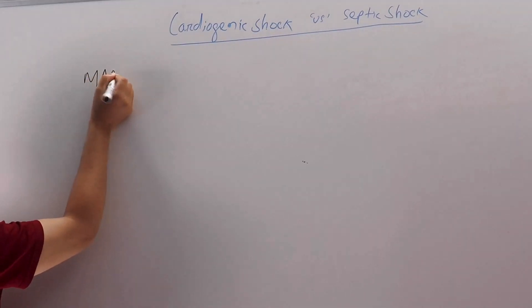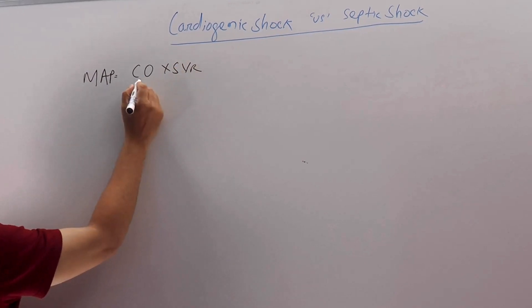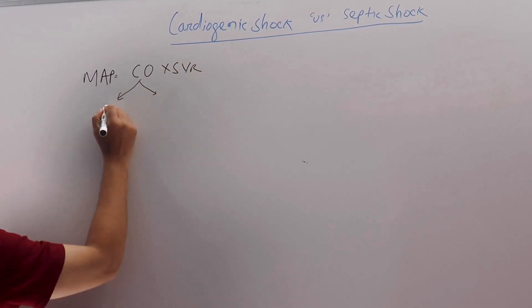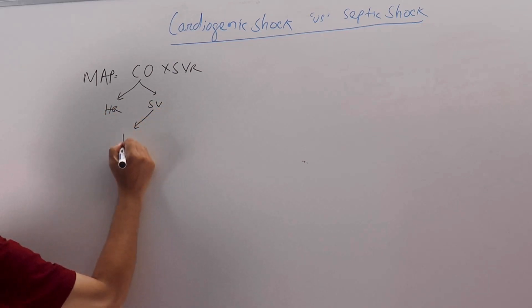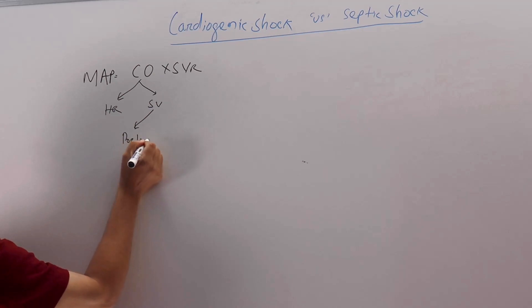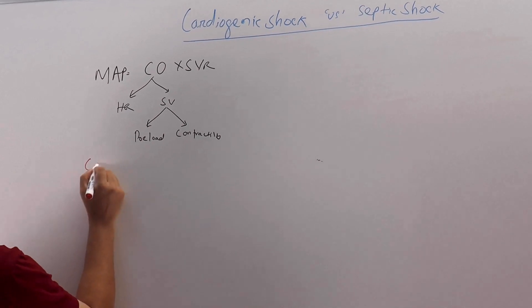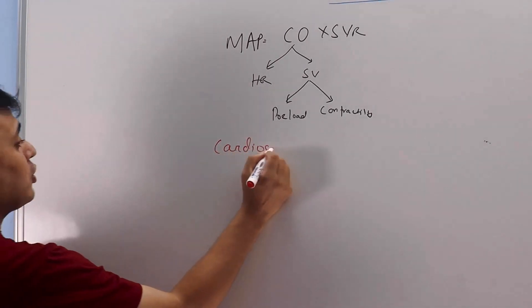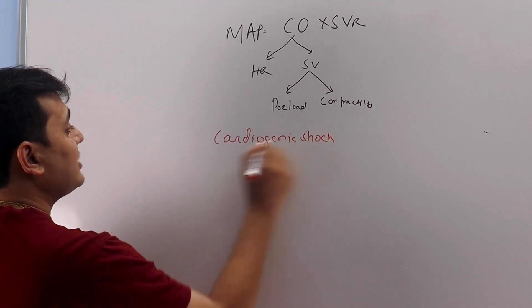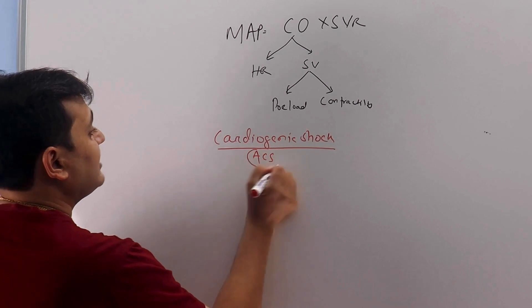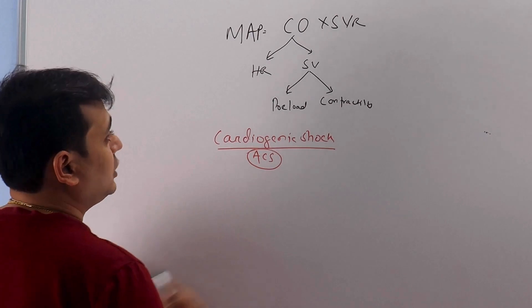Mean arterial pressure is equal to cardiac output multiplied by systemic vascular resistance. Cardiac output depends upon heart rate and stroke volume. Stroke volume depends upon preload and contractility. The most common cause of cardiogenic shock is acute coronary syndrome, especially STEMI.